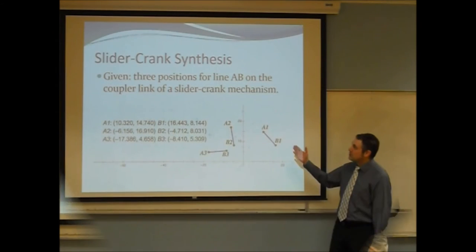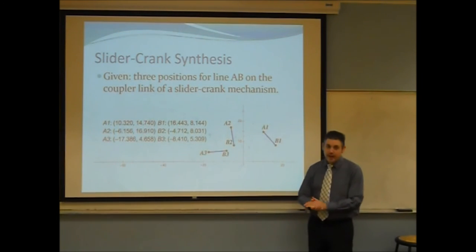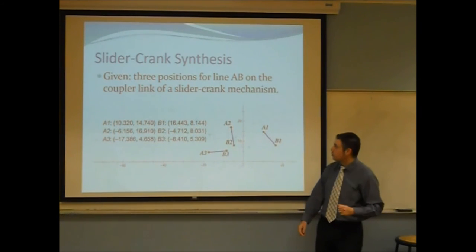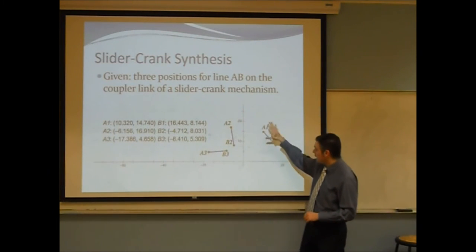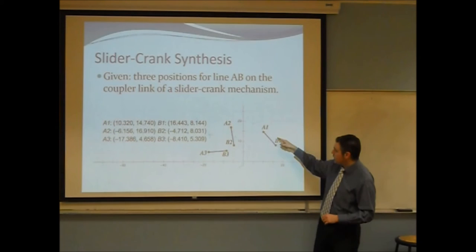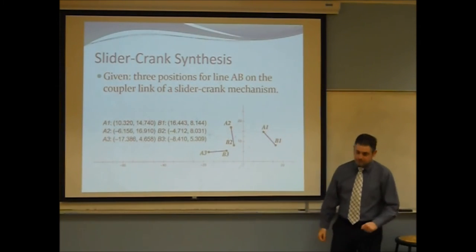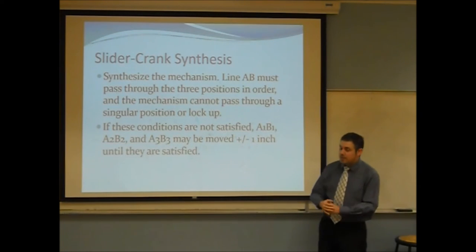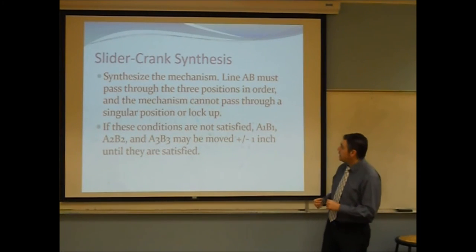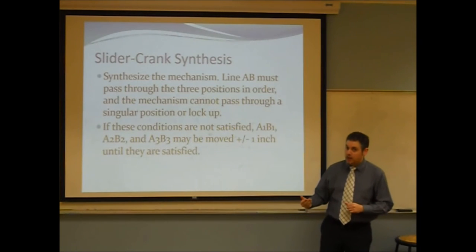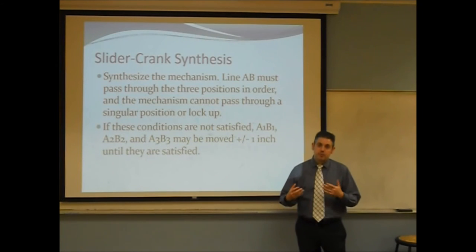For the slider-crank synthesis, we were given three positions for line AB on the triangular coupler length of the slider-crank mechanism. You can see the coordinates for the three positions here, and they're graphed in this grid. As you can see, this is A1B1, A2B2, and A3B3. We need to synthesize the mechanism. Line AB had to pass through the three positions in order and could not pass through a singular position or lock up. A lockup would occur any time the coupler was too far away from the slide and could not reach it.